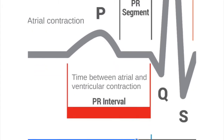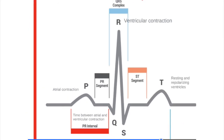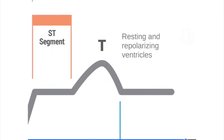This impulse then travels to the AV node, which in turn sends out an electrical impulse and travels through the bundle branches and the Purkinje fibers of the ventricles, resulting in ventricular contraction. The time between atrial and ventricular contraction registers on an ECG strip as the PR interval, while the ventricular contraction registers on an ECG strip as the QRS complex. Following ventricular contraction, the ventricles rest and repolarize, which is registered on the ECG strip as the T wave.